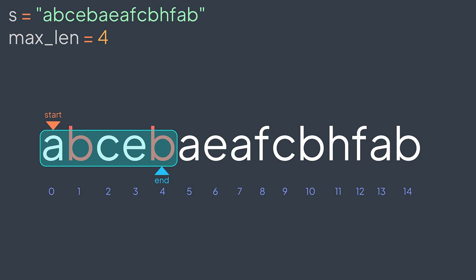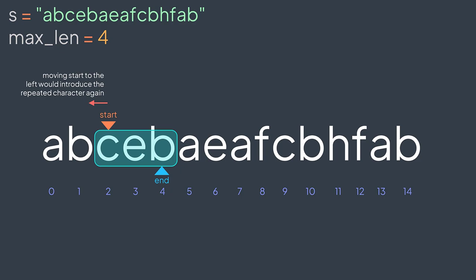When we move to the next iteration, b is repeated — its first instance is at index one. To remove the repeated character, we put start just after it, at index two. We drop indices zero and one because any substring starting there would have two instances of b. By putting start at two, our substring between start and end now has no repeating characters and is valid again. The longest valid substring ending at index four is the one starting at index two: c, e, b — length three, which doesn't replace four.